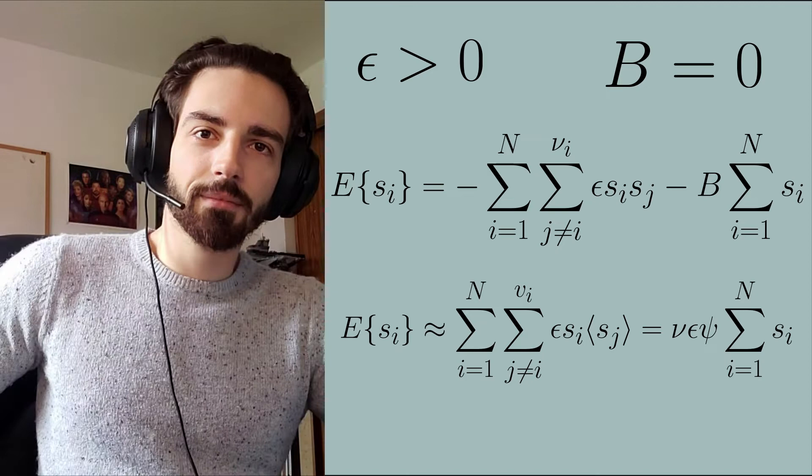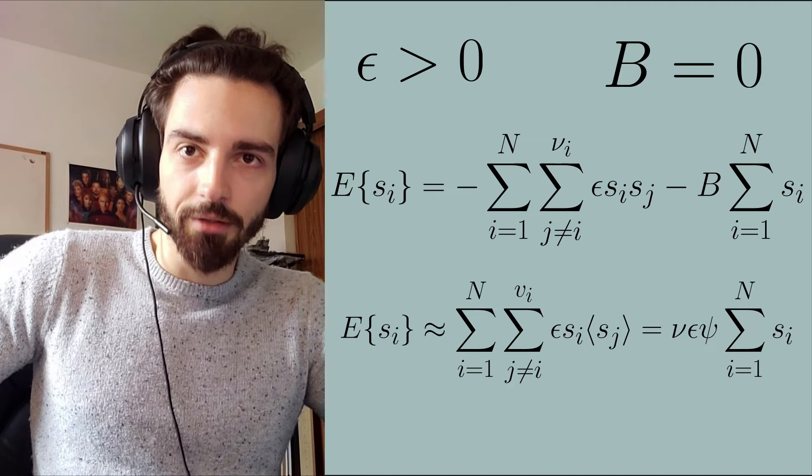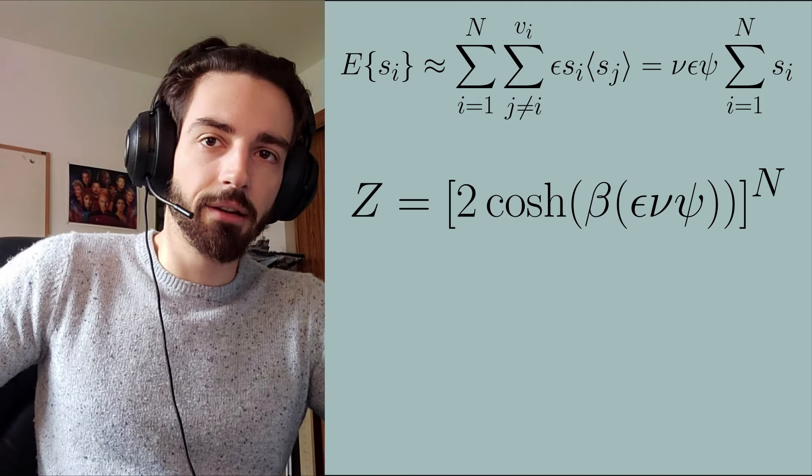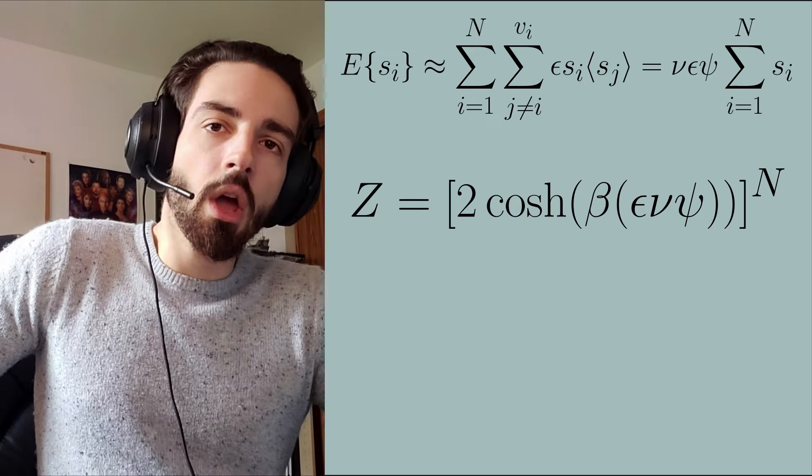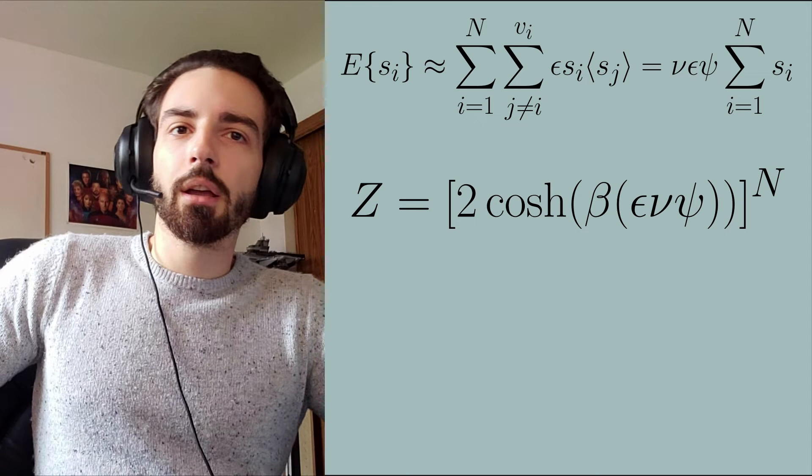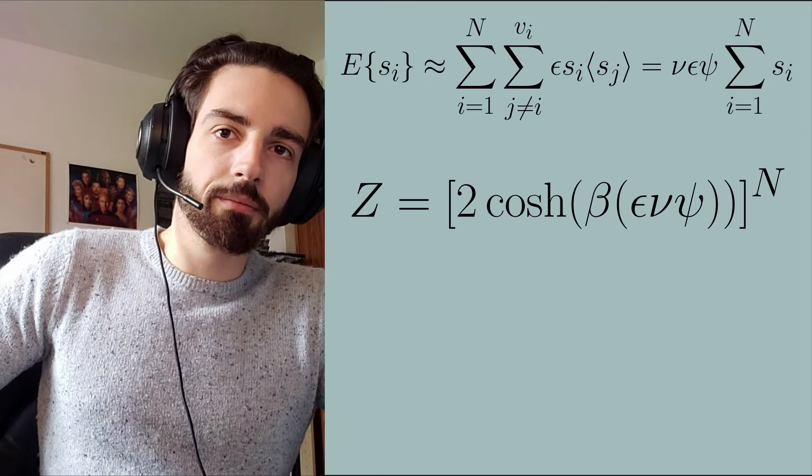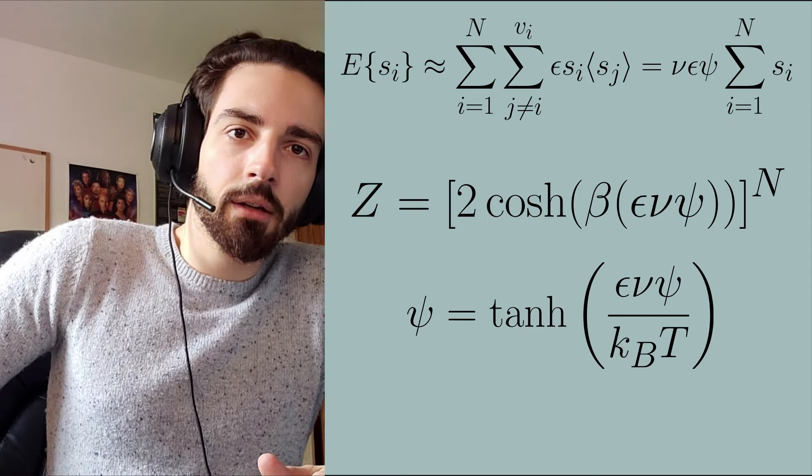So at this point we want to use this new equation for the system energy in the field-free state and substitute it into the partition function. Evaluating yields Z, the partition function, is equal to 2 times the hyperbolic cosine of the following terms all to the power of N, where N is the number of sites in the system. When we combine this with the earlier equation for the expectation value of ψ, we can obtain a transcendental equation given in the following way. Again, this is at zero applied field.